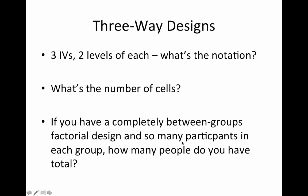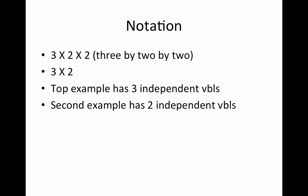If you have a completely between-groups factorial design with so many participants in each group, how many people do you have total? Here's the notation: three-by-two-by-two. Three-by-two-by-two is three independent variables; three-by-two is two independent variables. Every time you see this 'by,' that means there's a new independent variable — so one, two, three here; one, two here.